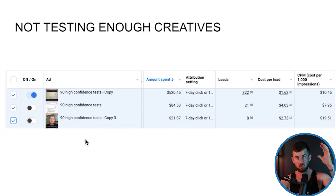Let's go over a couple of things. If you've been watching the channel, the number one issue is not testing enough creatives. This is easily one of the lowest-tier things you could be doing to drastically improve performance, which is consistently testing new creatives.